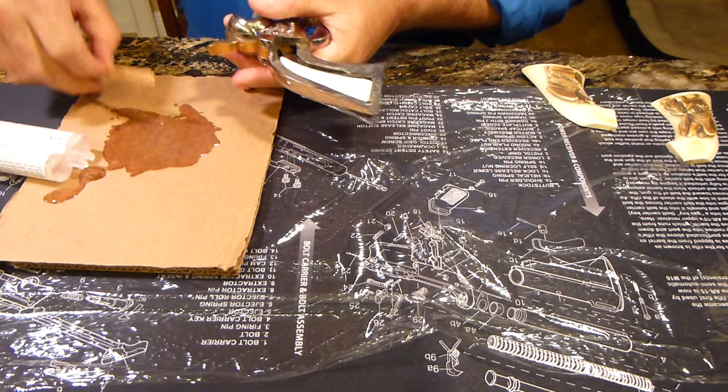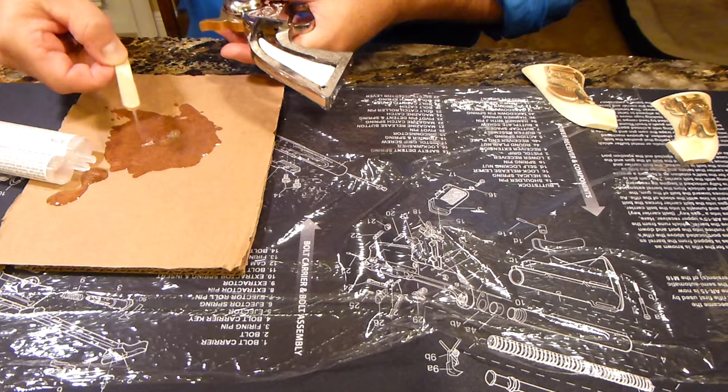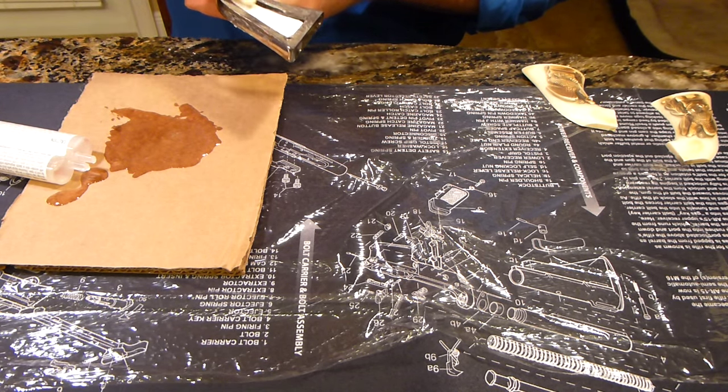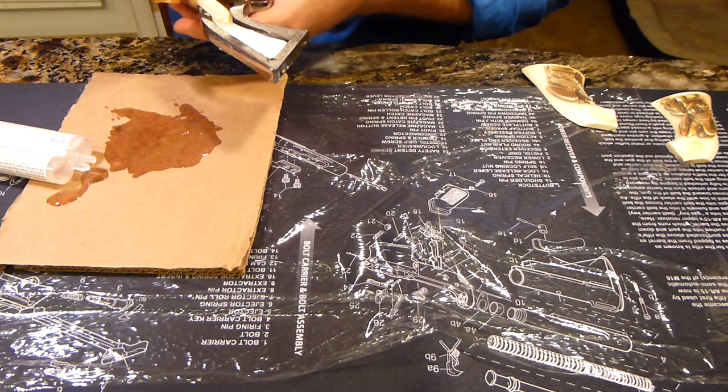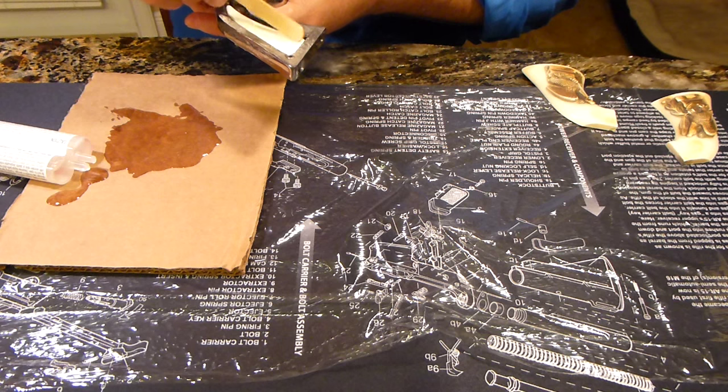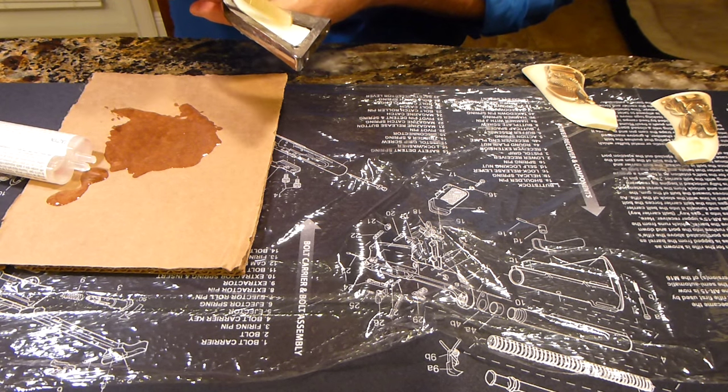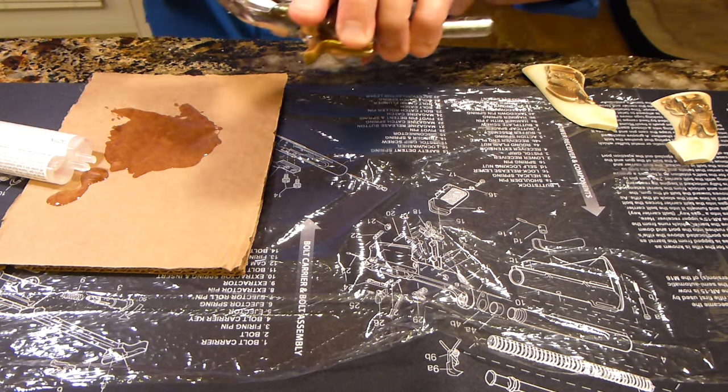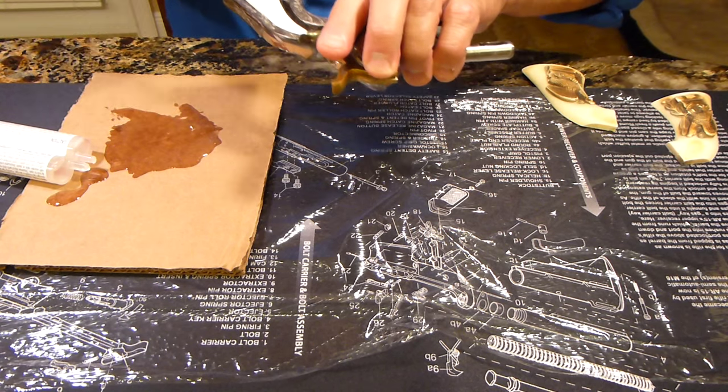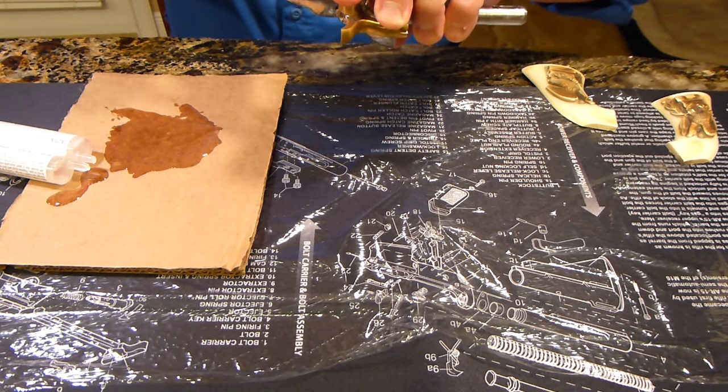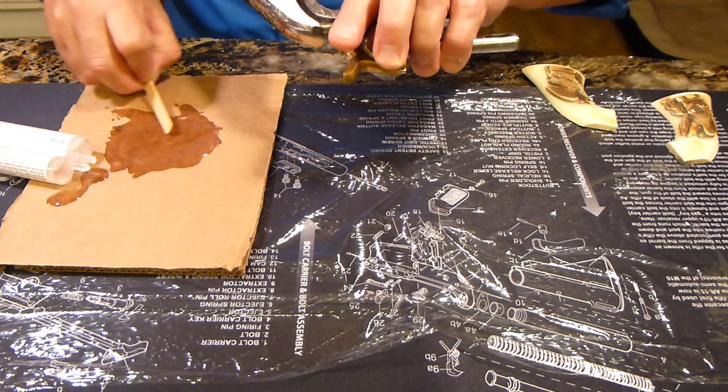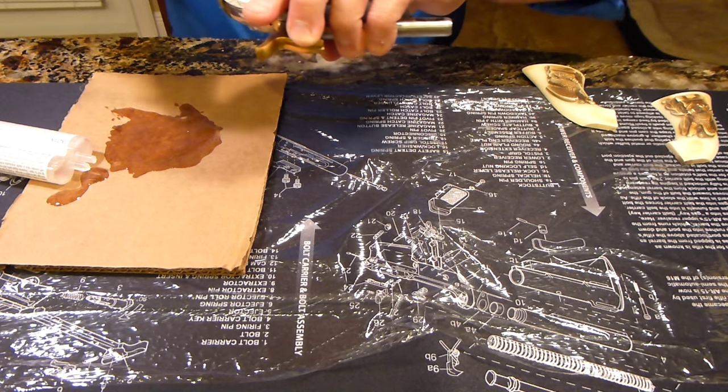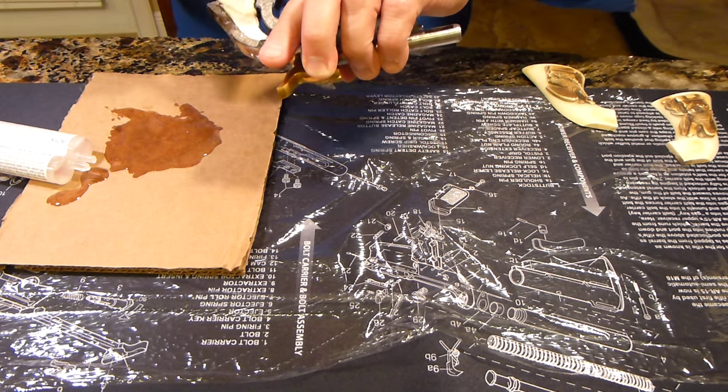Now, let's get some epoxy on this. Not too much, but enough to get a good stick on it. Technically, you're supposed to put this on both sides. Meaning a little bit on this and a little bit on the back of the grip. But I think with the rubber bands we'll be okay. That is clearly too much. Mix that up a little bit.